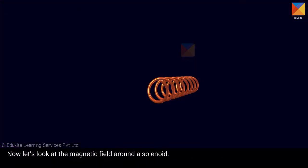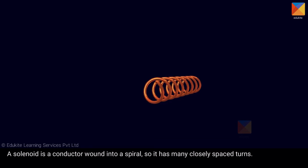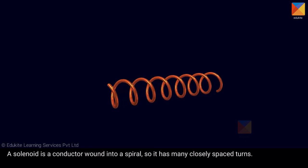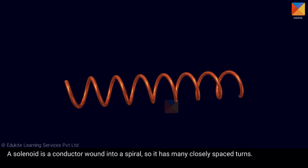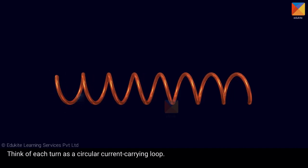Now let's look at the magnetic field around a solenoid. A solenoid is a conductor wound into a spiral, so it has many closely spaced turns. Think of each turn as a circular current carrying loop.